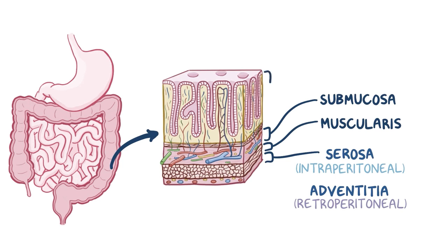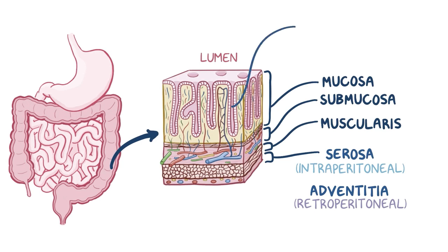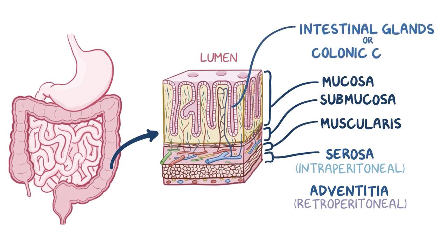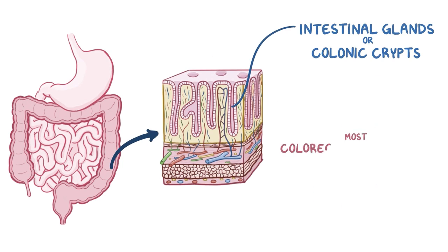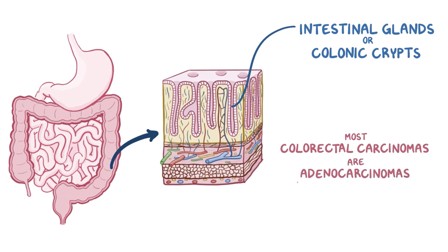And finally, there's the inner layer of the intestine, called the mucosa, which surrounds the lumen of the gastrointestinal tract and comes in direct contact with digested food. The mucosa has invaginations called intestinal glands, or colonic crypts, and it's lined with large cells that are specialized in absorption. Most colorectal carcinomas are adenocarcinomas, meaning that they arise from the cells lining the intestinal glands.